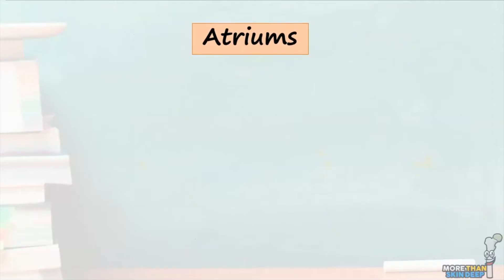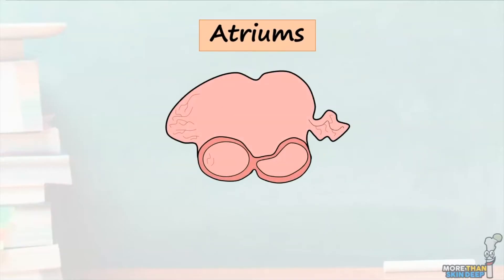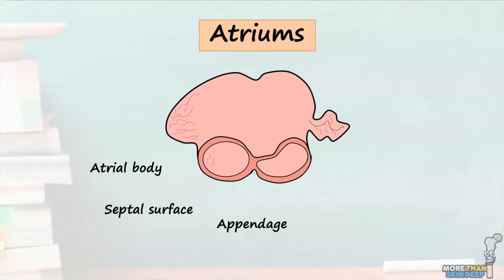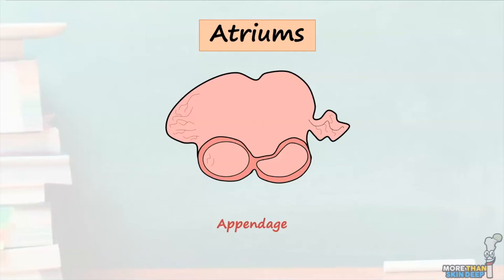Let's start off by considering the atria. As mentioned in our last tutorial, the atria are comprised of five main components including the atrial body, the septal surface, the atrial appendage, the venous component, and the atrial vestibule. Of these structures, the atrial appendage is the most constant morphological feature and is the feature used to distinguish between the morphologically right atrium and the morphologically left atrium.